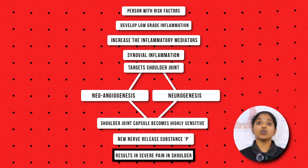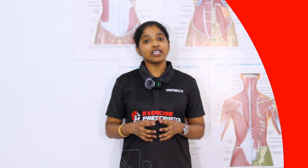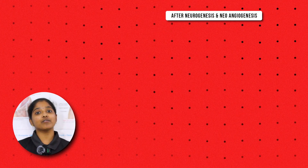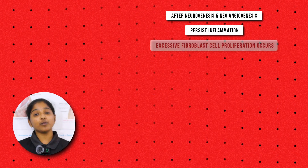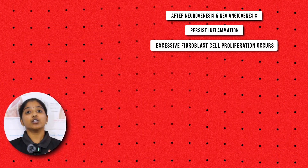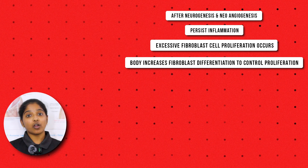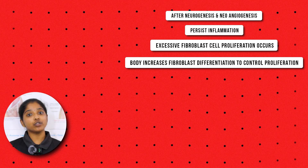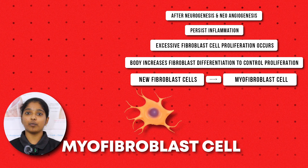This is why patients who have adhesive capsulitis will develop pain as the first response. Now, if the inflammation persists, fibroblast proliferation occurs excessively in the affected shoulder joint. To control the over-expression of fibroblast cells, our body will increase fibroblast differentiation, and the newly produced fibroblast cells will be differentiated into myofibroblast cells.